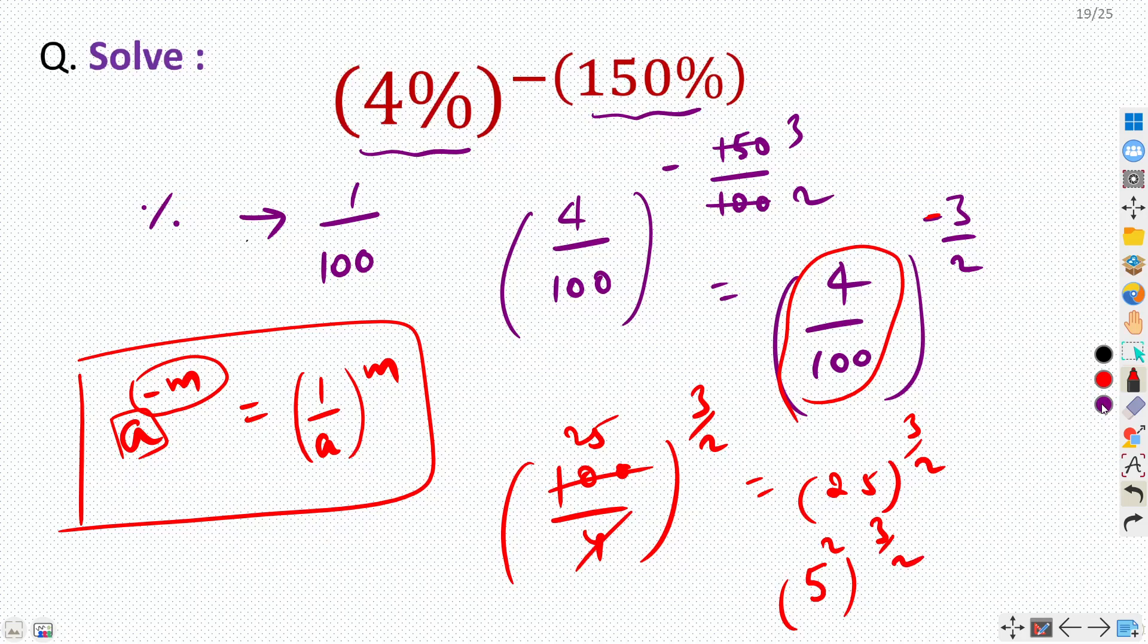Now we can again use a property which says that a raised power m raised power n is nothing but a raised power m into n. So we are multiplying these two powers.